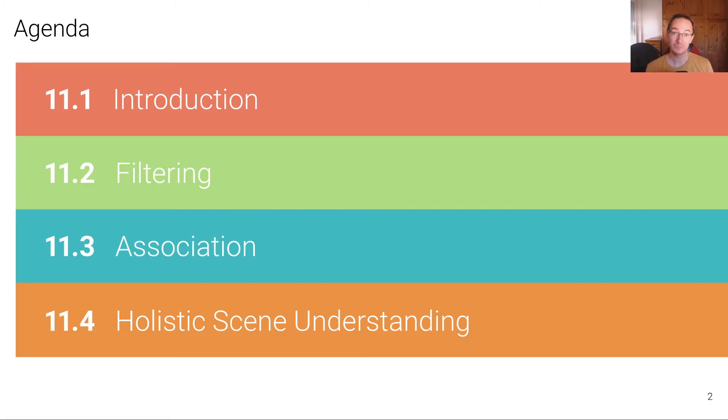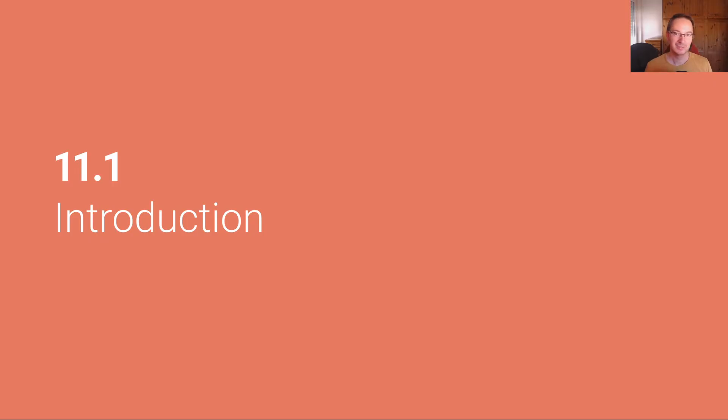In unit 3, we'll then move on to the association problem. How can we associate detections in a frame to existing object tracks from previous frames? And then finally, we'll have a short overview of techniques that integrate object tracking more holistically into a scene understanding process. For example, by utilizing HD maps to help and support the object detection and tracking problem or by estimating the object tracks and the scene layout jointly. Let's get started with the introduction unit.